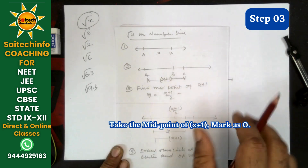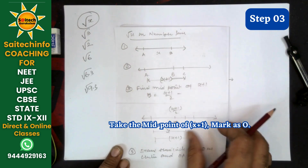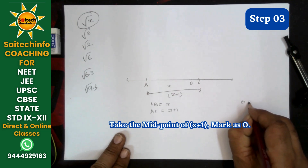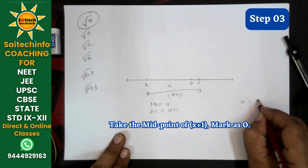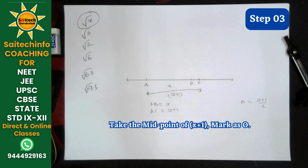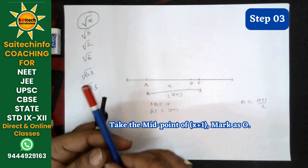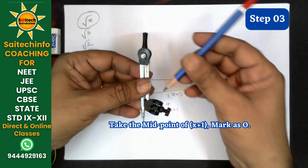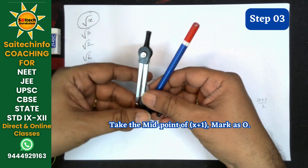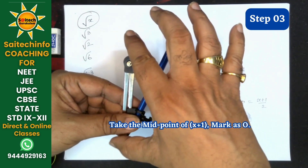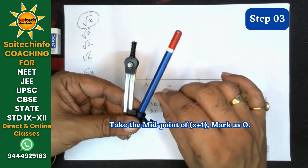Now let us take the midpoint of AC, which equals x plus 1. O is the midpoint of AC, meaning that O equals (x+1) divided by 2. To find the midpoint you can use a compass. Always keep a shorter pencil in the compass — it should not be long, and its length should be shorter than the arm of the compass.